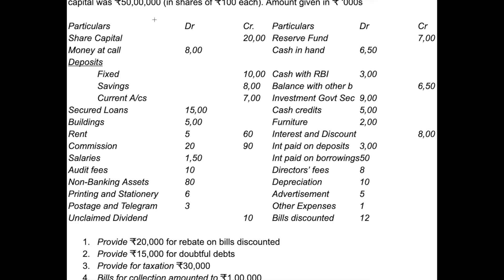Here is an item — share capital. Share capital is a schedule. The next one is reserve fund; the reserve fund and reserves and surplus is also a schedule. Money at call is Schedule 7; the balance with banks and money at call at short notice. Cash in hand is Schedule 6 — cash in hand and cash with RBI. Deposits is Schedule 3.